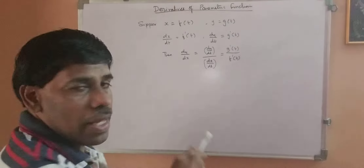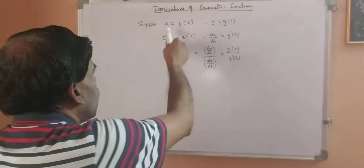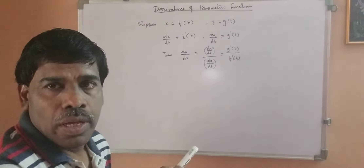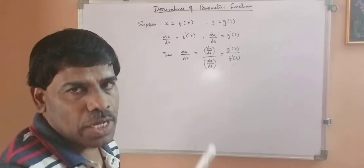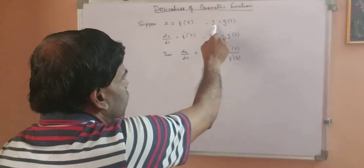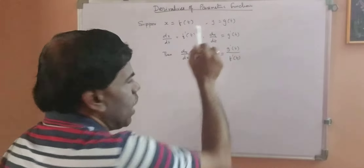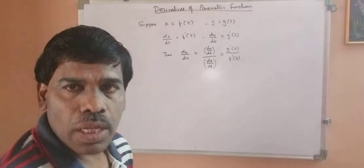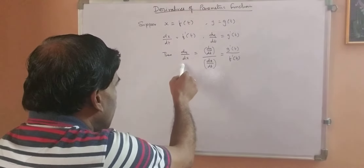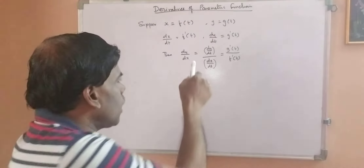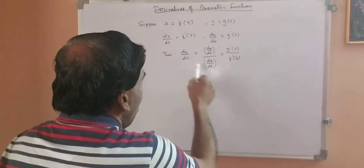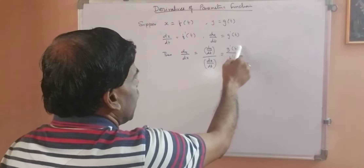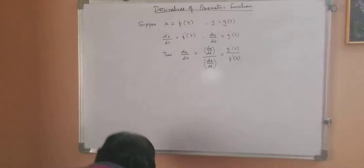What we are interested in is dy by dx. So what you have to do is: differentiate x with respect to t, which gives dx by dt — that is f'(t). Similarly, when you differentiate y with respect to t, we get dy by dt, which is g'(t). Now, dy by dx equals dy by dt divided by dx by dt, which ultimately gives g'(t) upon f'(t).